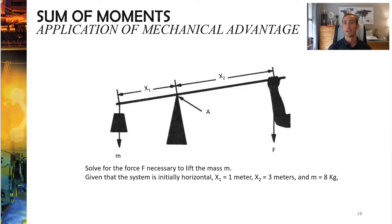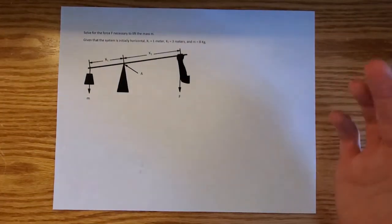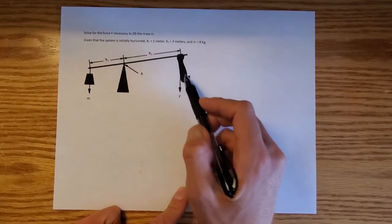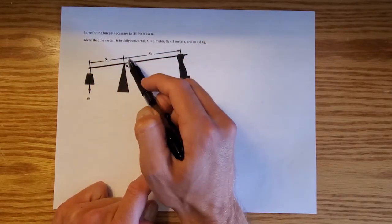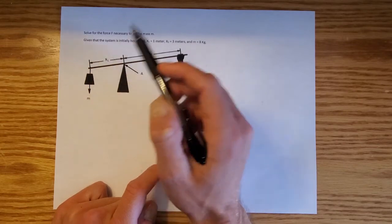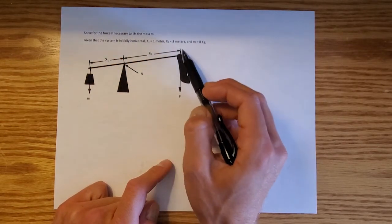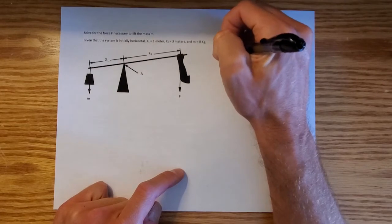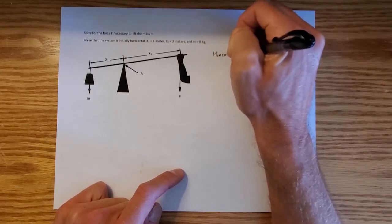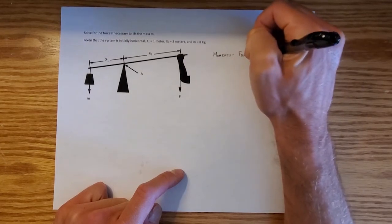Now we're going to go through examples to show how to apply the moments equation in greater detail. In this particular question, we have a standard lever. A person is pulling on the lever arm and trying to lift a block on the other side. We'll showcase how the sum of moments equation can actually solve for a numerical answer. The moment equation is: moments equals force times distance, and for a system at rest, the sum of moments about a particular point must equal zero.